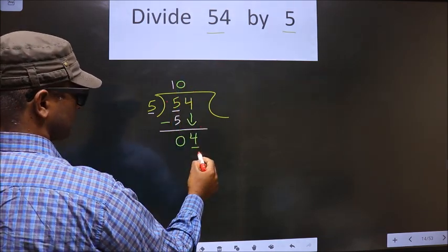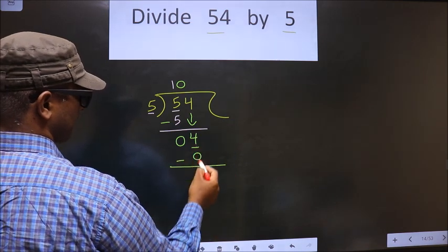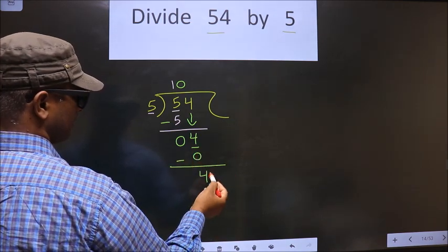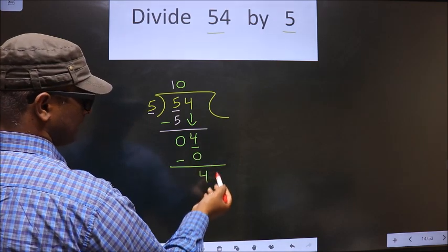So 5 times 0 is 0. Now you subtract: 4 minus 0 is 4. Now we did not bring any number down.